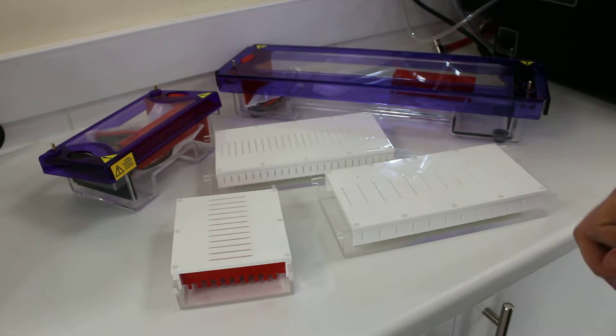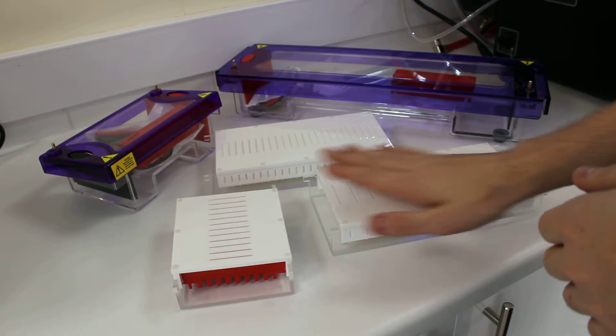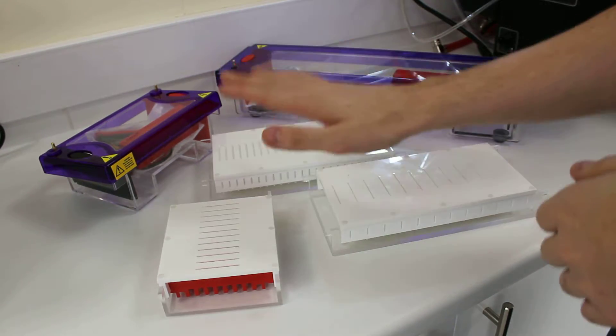This is a short video to show the difference between our 96-well electrophoresis systems. We have three different comb blocks and two different tanks.